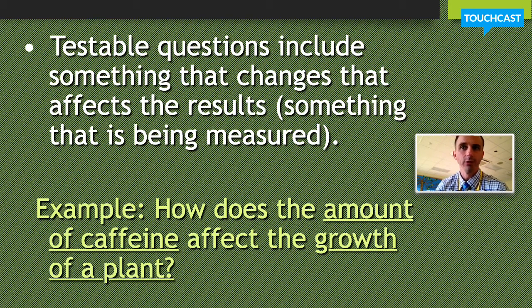So a testable question includes something that changes that also affects the results. And then you measure something, something that can be measured. If you're measuring the height of something, if you're measuring, let's say you're throwing or launching something, you're going to measure the distance. Or if you're seeing how something grows, you want to be able to measure it.